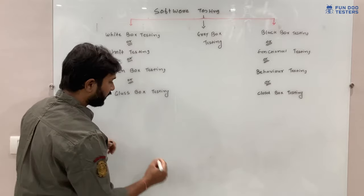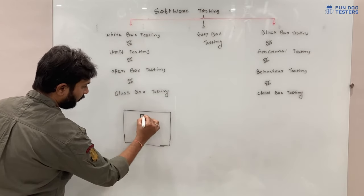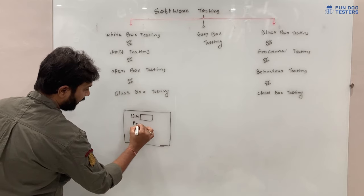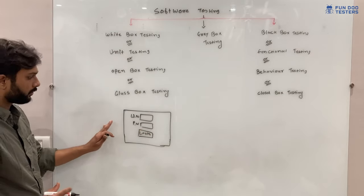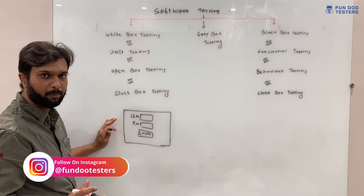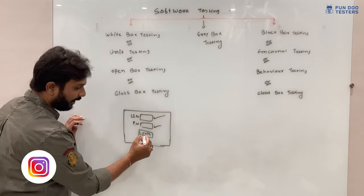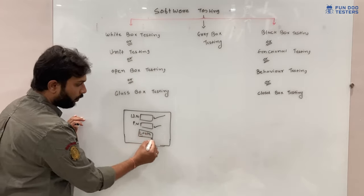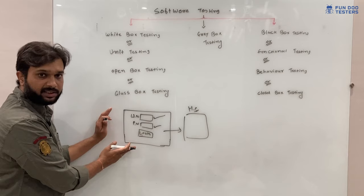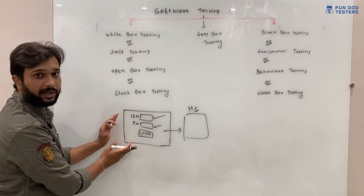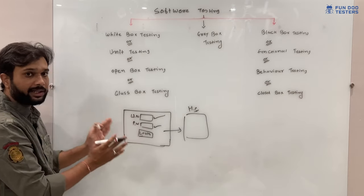For example, take a login functionality — a simple web application with a username field, a password field, and a login button. To perform black box testing, we enter the username, enter the password, and click the login button. If we reach the home page, we have tested the functionality of the application. We are not dealing with the code — that is why this is called black box testing.